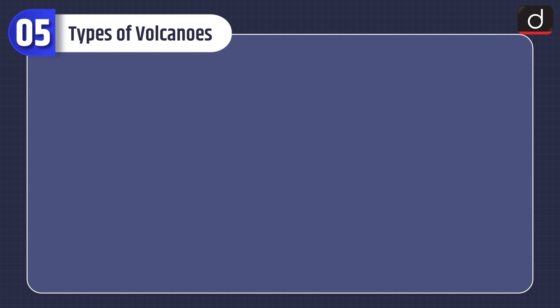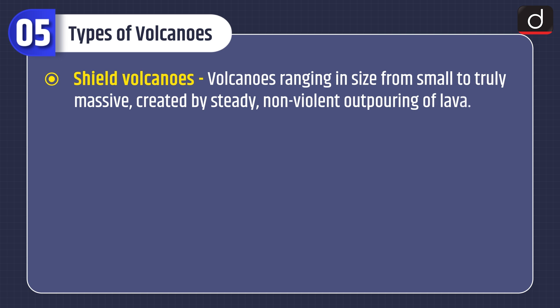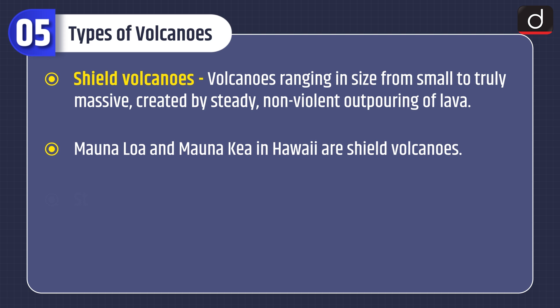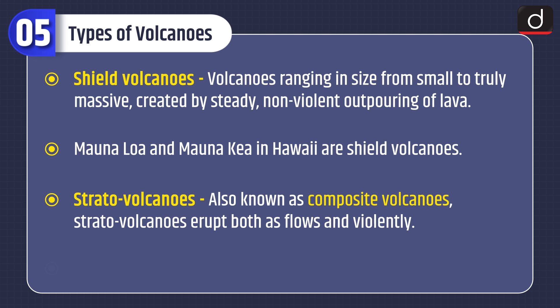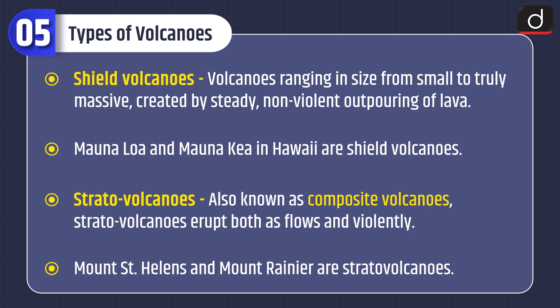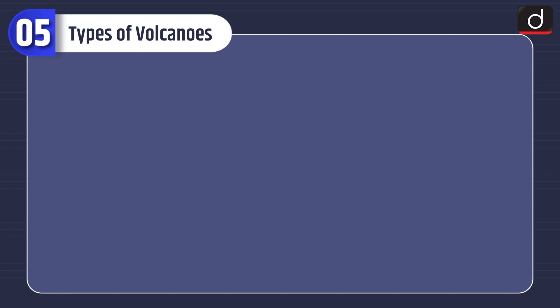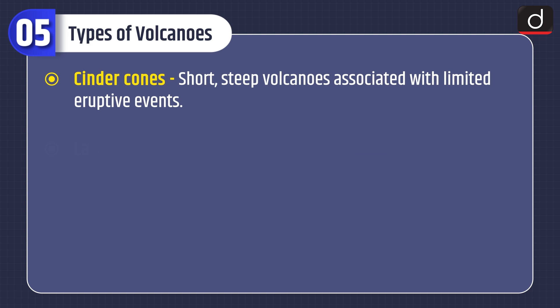Now let's have a look at the types of volcanoes. Shield volcanoes: volcanoes ranging in size from small to truly massive, created by steady, non-violent outpouring of lava. Mauna Loa and Mauna Kea in Hawaii are shield volcanoes. Stratovolcanoes, also known as composite volcanoes, erupt both as flows and violently — Mount St. Helens and Mount Rainier are stratovolcanoes. Cinder cones are short, steep volcanoes associated with limited eruptive events.